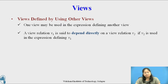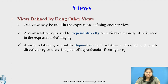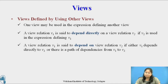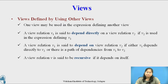A view relation v1 is said to depend directly on view relation v2 if v2 is used in the expression defining v1. A view relation v1 is said to depend on view relation v2 if either v1 depends directly on v2 or there is a path of dependencies from v1 to v2. A view relation v is said to be recursive if it depends on itself.